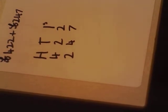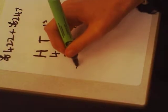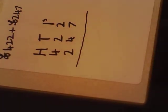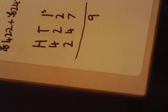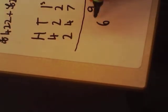And then you put a line under it. So, 2 add 7 is 9. And then 20 add 40 is 60. And then 400 add 200 is 600.